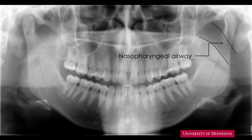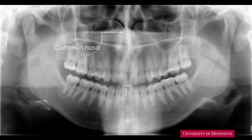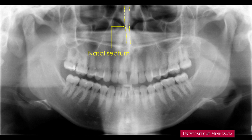Near the midline of the maxilla, there is a curved radiolucent band — the common nasal meatus. I am tracing the right meatus; please try to identify the meatus on the left side. Now that we know the common nasal meatus, we can identify its medial border — a thick radiopaque band at the midline of the maxilla — the nasal septum. The other border of the meatus is a curved line of contrast; these curved structures are the anterior parts of the inferior turbinates.